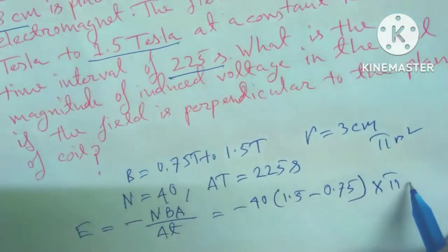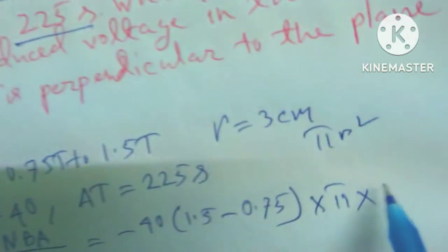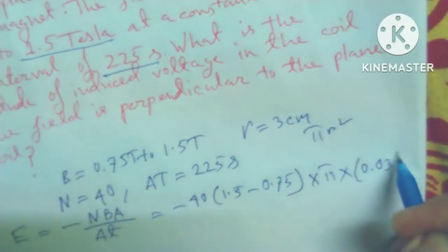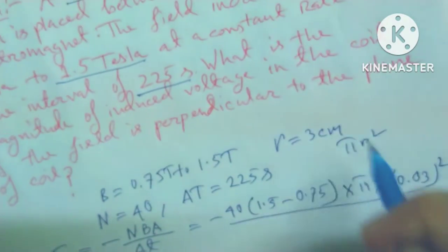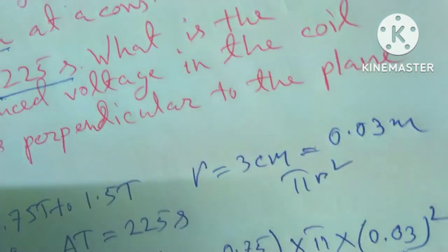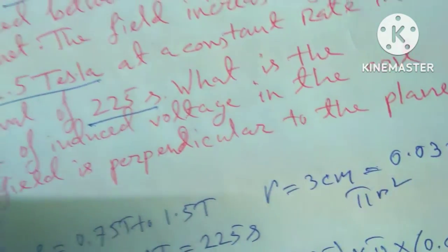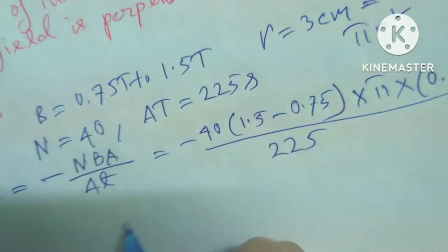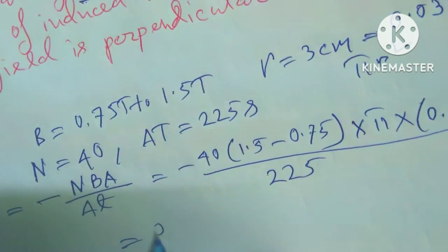So pi r square, pi into 3 centimeter, so 0.03 whole square, because I have to convert it into meters, 0.03 meter. And now del t equal to divided by 225.